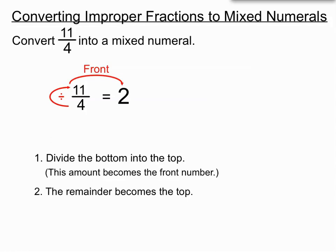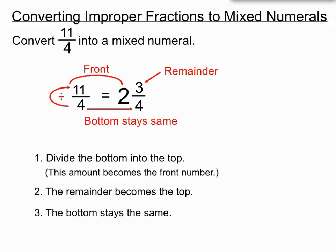So 4 goes into 11 twice, so that's created the front number. And the remainder was 3. That becomes the top. And the bottom stays the same. So 4 went into 11 twice, created that 2 there. 4 went into 11 twice with 3 remainder, that created our 3 for the top. And the bottom stayed the same. So 11 over 4 has become 2 and 3 quarters.